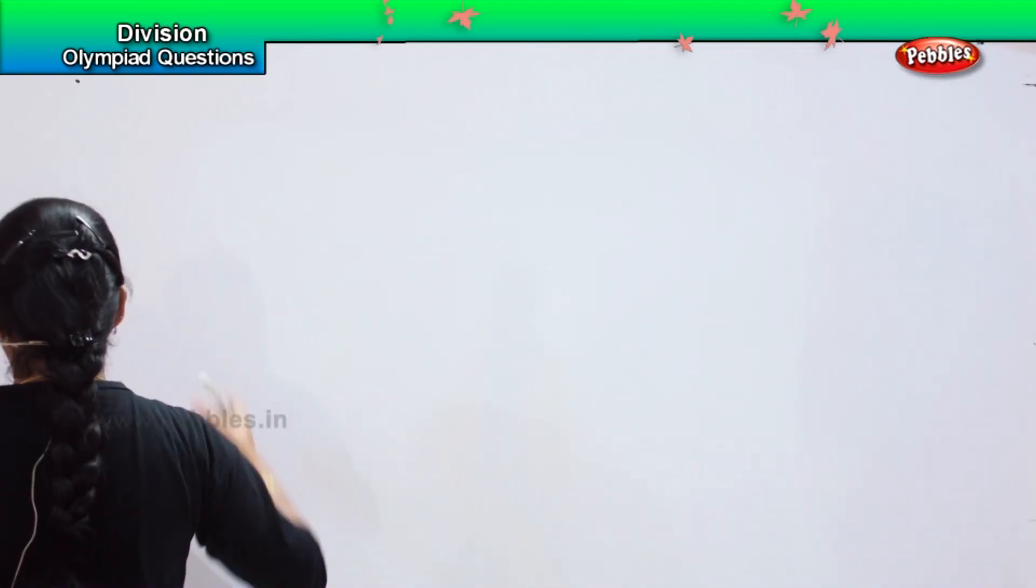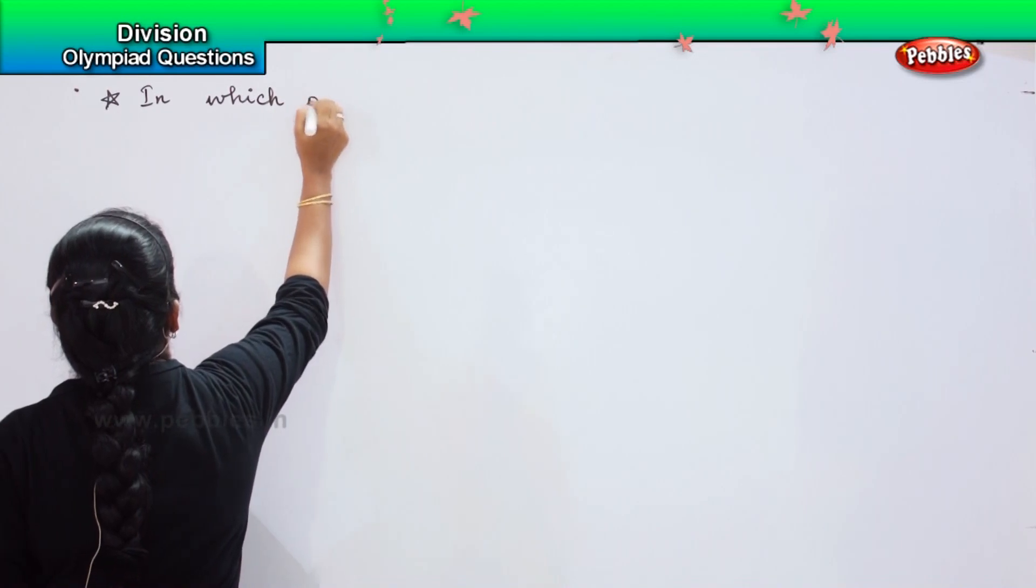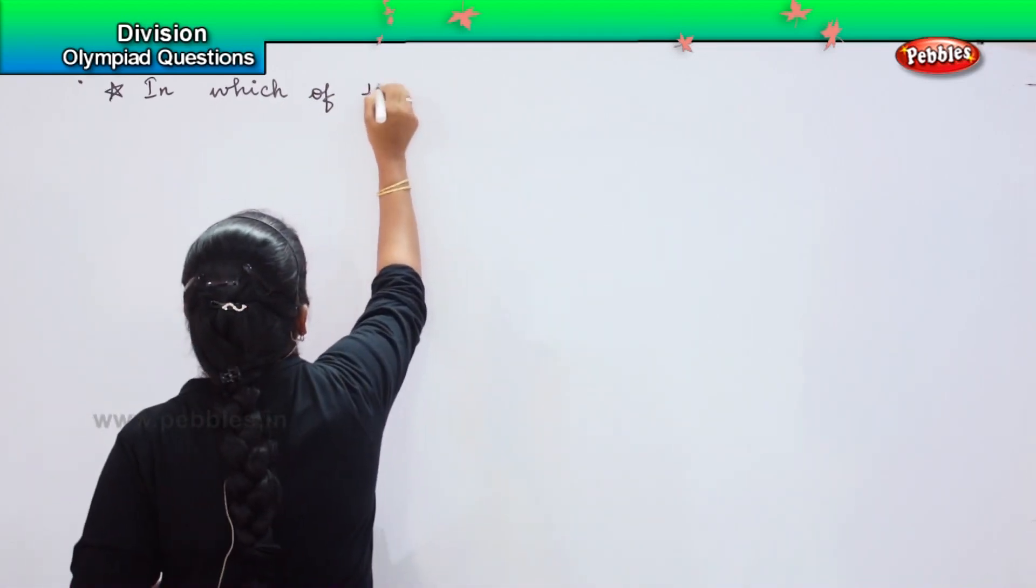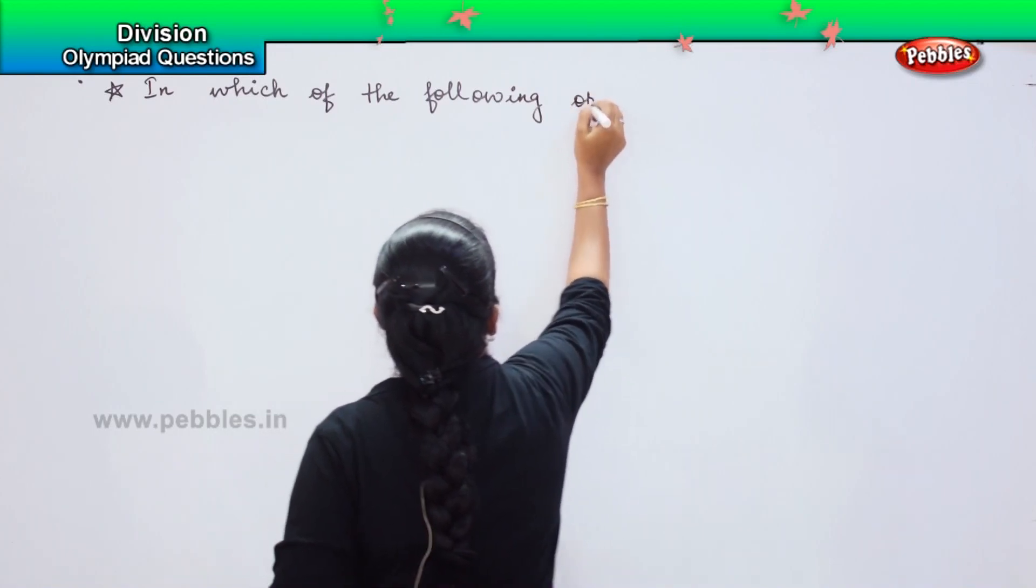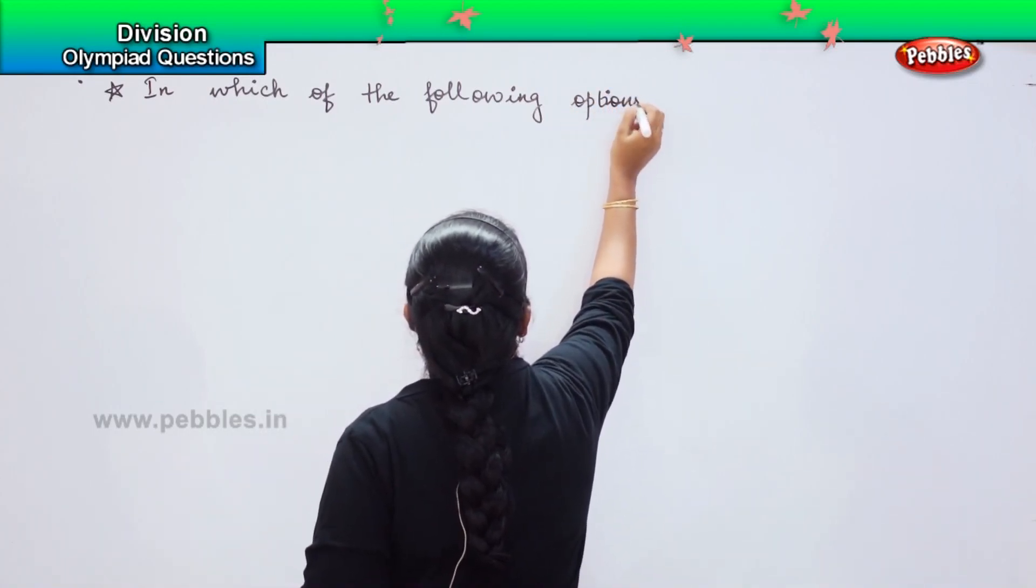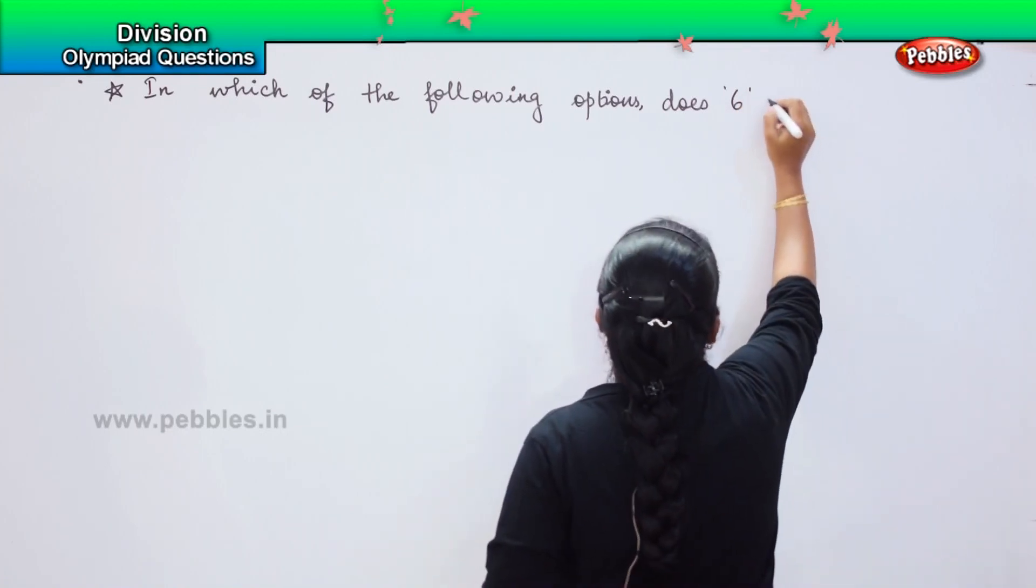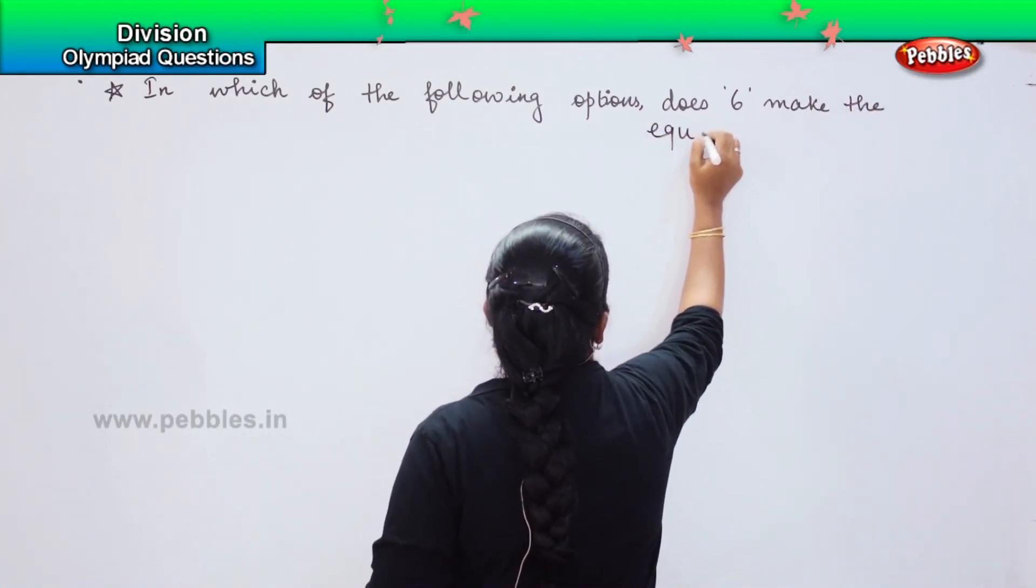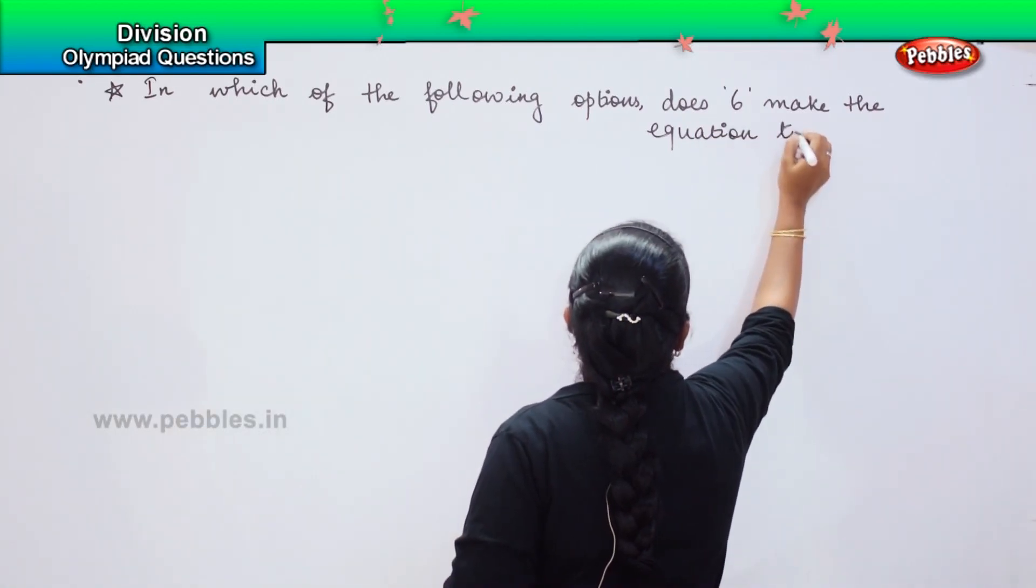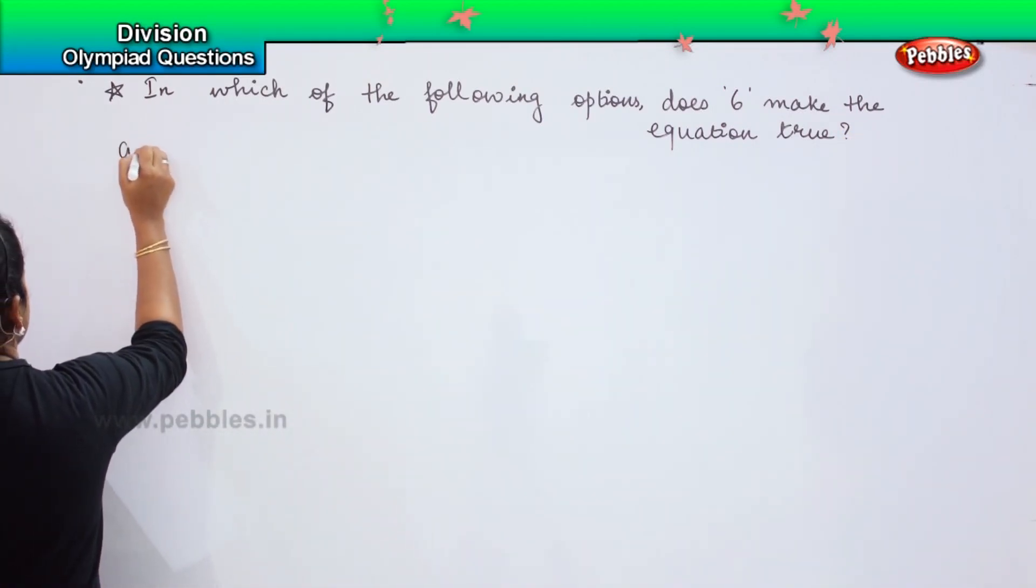Are you ready for the next question? Here is your next question. The next question says, in which of the following options does box make the equation true? I am going to give you four options and we need to find which among the given options are the correct one.